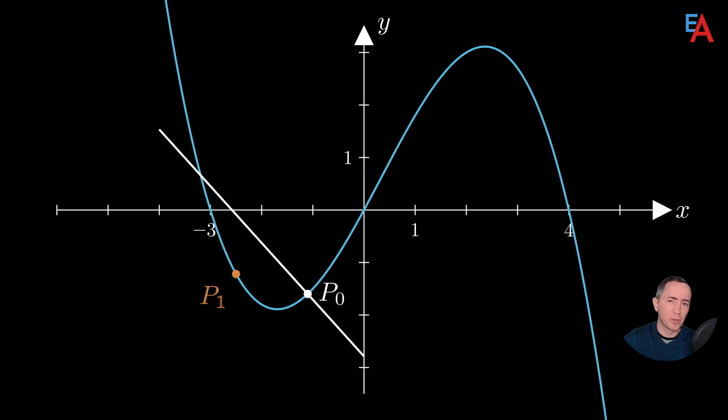Then we take some neighboring point P1, it doesn't matter which side of point P0. Then we create a tangent line and a normal line. We leave only the normal lines for further construction.